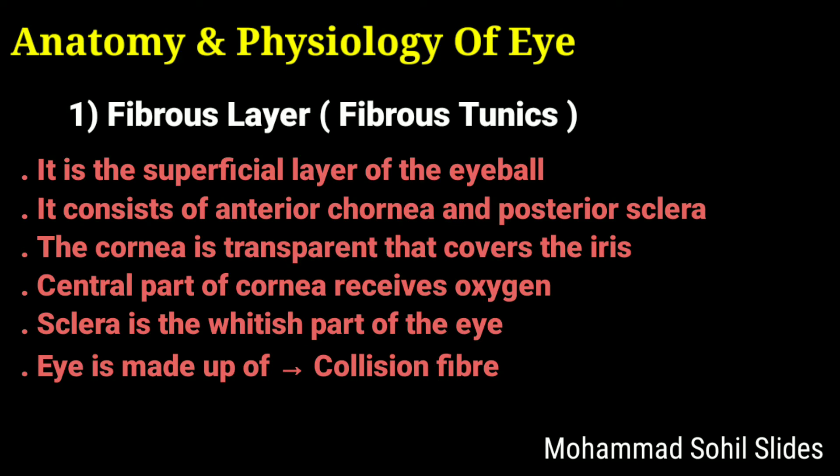The sclera covers the entire eyeball and gives shape to it. At the junction of the sclera and cornea there is an opening called the scleral venous sinus, which drains aqueous humor. This is all about the fibrous layer or fibrous tunics.